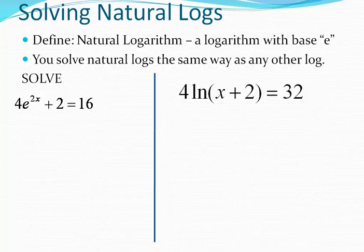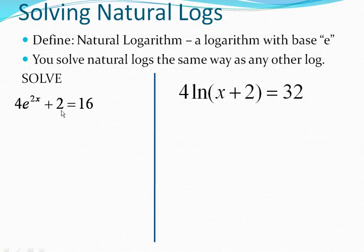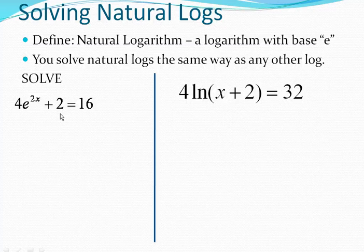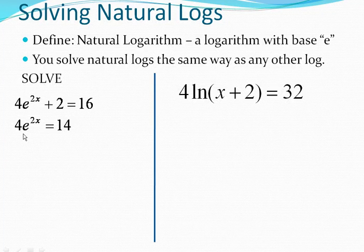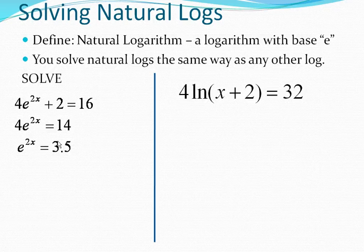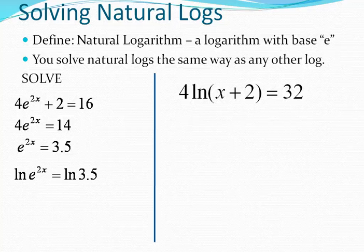Solving natural logs works the same way. I know it says ln on the right, but we say natural logarithm. Here's our base e, and on the left side we would obviously subtract 2 first. To isolate the base e, we would also have to divide by 4, and you get e raised to the 2x power equals 3.5.